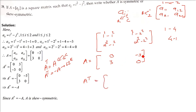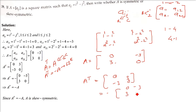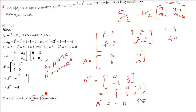A transpose changes rows to columns, giving [0, 3; -3, 0]. Taking negative of A gives [0, -(-3); -(3), 0] = [0, 3; -3, 0]. Since A transpose equals negative A, this confirms that A is a skew-symmetric matrix.